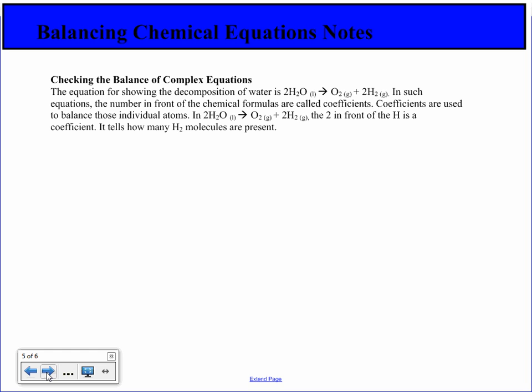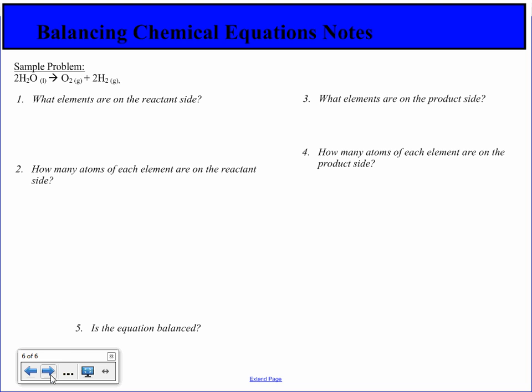The equation for the decomposition of water is 2H2O converted to O2 plus 2H2. In such equations, the numbers in front of the chemical formulas are called coefficients. Coefficients are used to balance individual atoms. The 2 in front of the H2 is a coefficient, and it tells you how many H2 molecules are present.